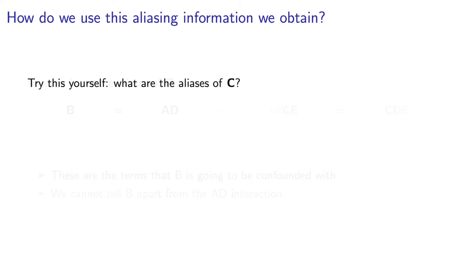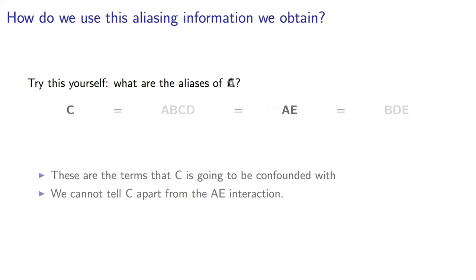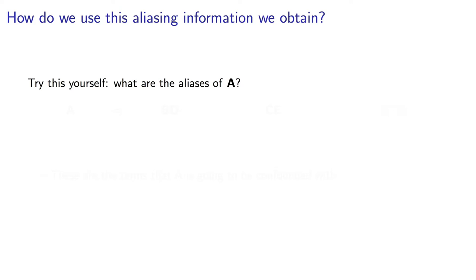Try this for yourself now, and figure out what factor C is confounded with. One last one, and this is a little surprising. Find out what factor A is confounded with. And before you go further with the video, try to also figure out in your mind what the practical implication of your answer is.